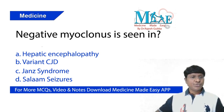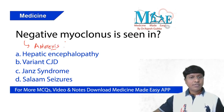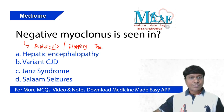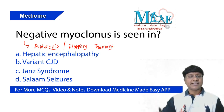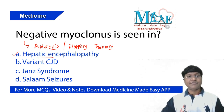First of all you should know what is negative myoclonus. Negative myoclonus is nothing but asterixis, also given by another terminology which is flapping tremors. So asterixis or flapping tremors is the terminology given for negative myoclonus, and it is seen in patients with hepatic encephalopathy.